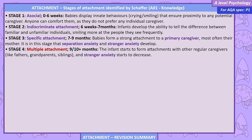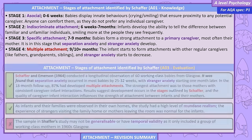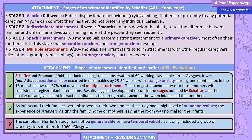Stage 3: Specific attachment, 7–9 months. Babies form a strong attachment to a primary caregiver, most often their mother. It is in this stage that separation anxiety and stranger anxiety develop. Stage 4: Multiple attachment, 9–10 months plus. The infant starts to form attachments with other regular caregivers like fathers, grandparents and siblings, and stranger anxiety starts to decrease. Schaffer and Emerson 1964 conducted a longitudinal observation of 60 working class babies from Glasgow. Separation anxiety occurred in most babies by 25 to 32 weeks, with stranger anxiety starting one month later.